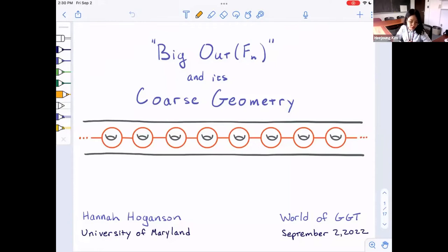The speaker is Hannah Hogarson from the University of Maryland, and she's going to speak to us about big out of F_n and its coarse geometry. Thank you so much for having me and thanks for coming. This is my first talk of the semester, so diving back in.